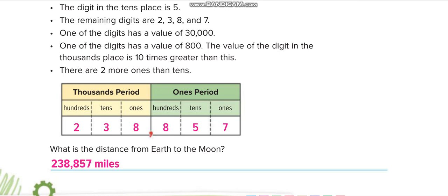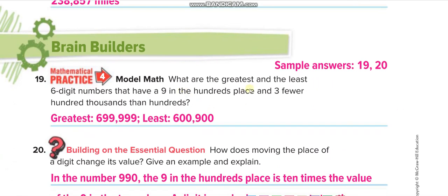What are the greatest and least six-digit numbers that have a 9 in the hundreds place? We place 9 in the hundreds place. Three fewer means minus three, so it is 6 in the hundred thousands place. To make the least number, fill the remaining places with the smallest digit, zero. To make the greatest number, fill the remaining places with the greatest digit, nine.